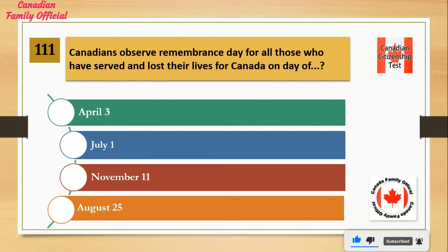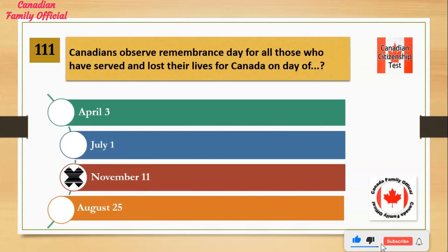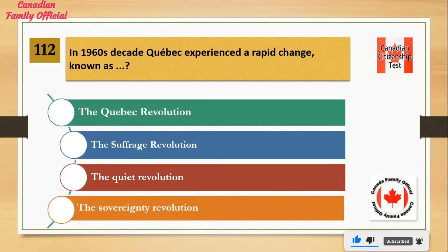Canadians observe Remembrance Day for all those who have served and lost their lives for Canada on: Number 1: April 3rd. Number 2: July 1st. Number 3: November 11th. Number 4: August 25th. And the answer is November 11th.